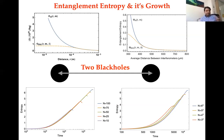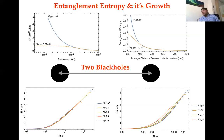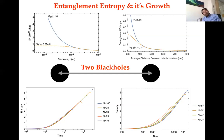One very interesting calculation: in the context of black holes, we can compute entanglement entropy, which goes as the area — the entropy of a black hole saturates at the area, as the no-hair theorem tells us nothing more can be added. If you take two black holes separated apart, they are interacting via off-shell graviton exchange and are thus entangled, and you can ask how this entanglement entropy behaves.